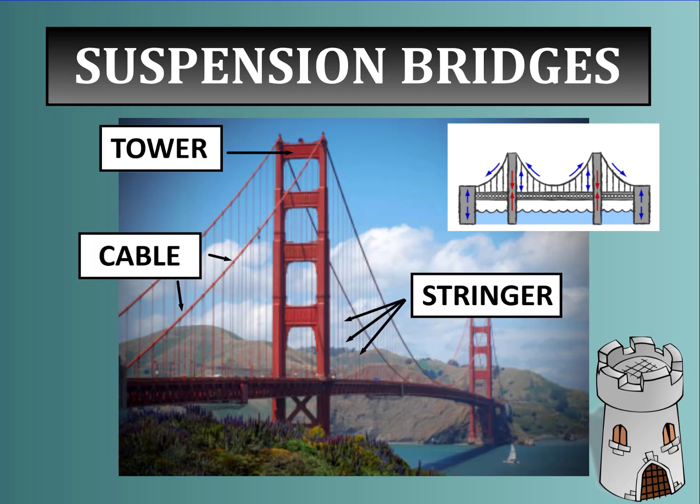Suspension bridges consist of towers with long cables running from tower to tower. Attached to each cable are stringers, which hold up the bridge deck. There are multiple points of tension in a suspension bridge, and the towers withstand compression.